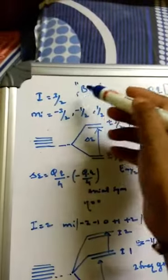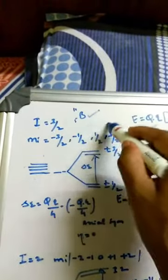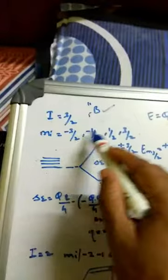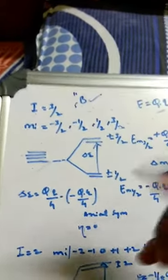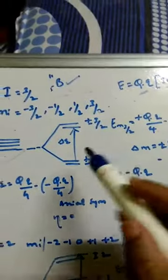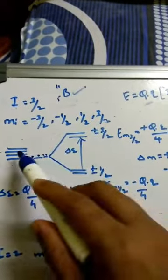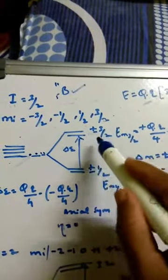For boron with nuclear spin I = 3/2, the mI values are −3/2, −1/2, +1/2, and +3/2 — four degenerate values. When η = 0 (axial symmetry), these split into two groups: ±1/2 and ±3/2.